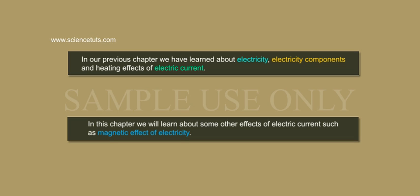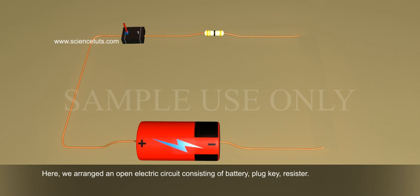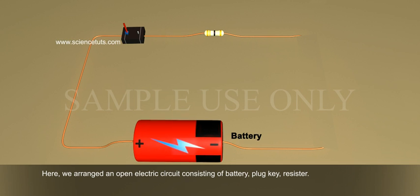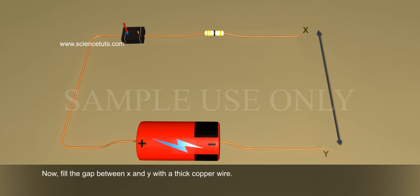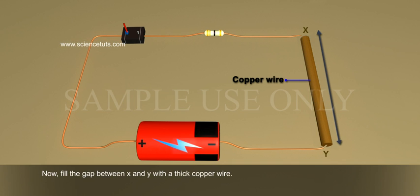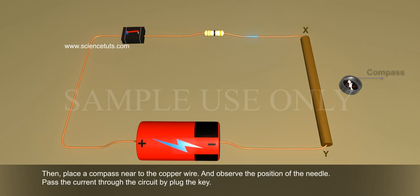Let us see this illustration. Here, we arranged an open electric circuit consisting of a battery, plug key, and resistor. Now, fill the gap between X and Y with a thick copper wire. Then, place a compass near to the copper wire and observe the position of the needle. Pass the current through the circuit by plugging the key.